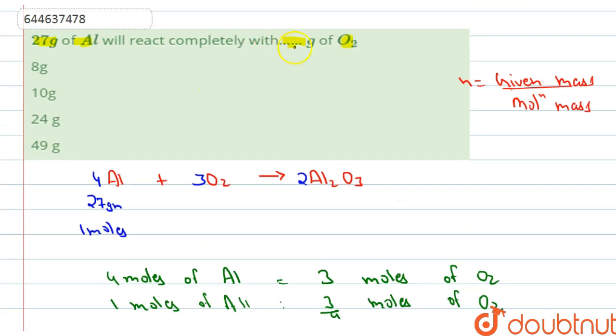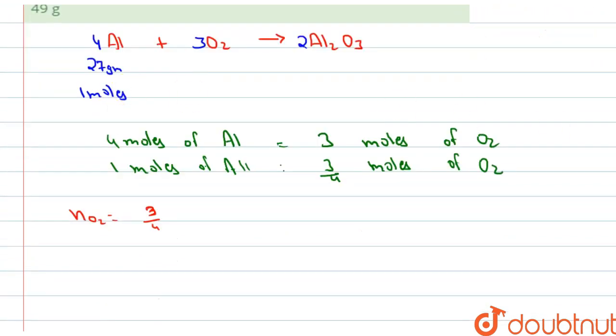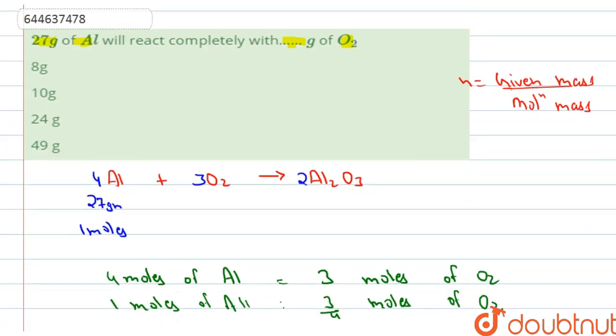But we have to find out the mass. To find out mass, we will multiply moles into molecular mass. The molecular mass of O2 is 32, so we will multiply 3 by 4 into 32. This is the mass of oxygen needed. 3 times 8 is 24, so 24 grams is needed.